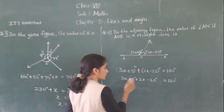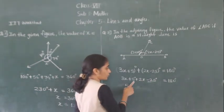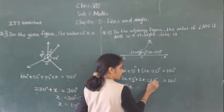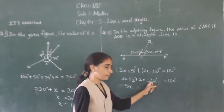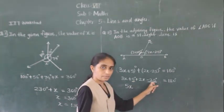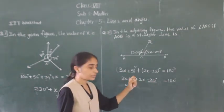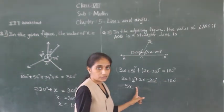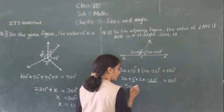Now, 3x plus 2x gives 5x. Then plus 5 minus 25: since the signs are plus and minus, we subtract. 25 minus 5 gives 20, and the greater number is 25 which is negative, so we get minus 20. So we have: 5x minus 20 is equal to 180 degrees.